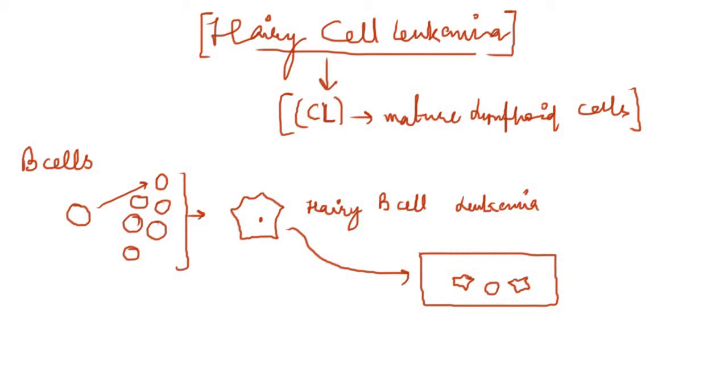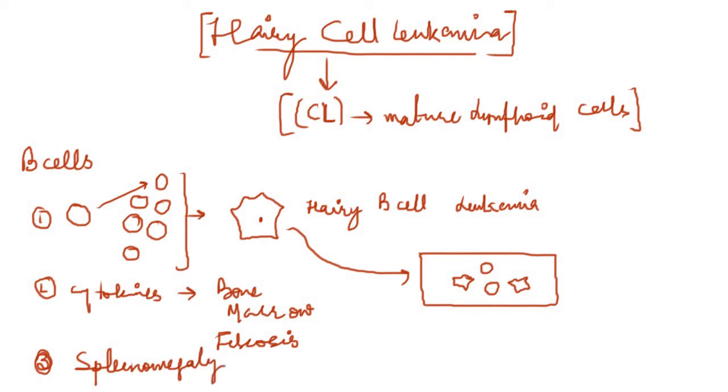Also these proliferated B cells, they will release certain cytokines and these cytokines will cause the bone marrow fibrosis. So in hairy cell leukemia, one of the important findings is that there is bone marrow fibrosis which is due to the release of cytokines from the B cells. Also these cells will infiltrate the spleen and this will lead to splenomegaly which is the enlargement of spleen. So the basic pathophysiology of hairy cell leukemia is the bone marrow fibrosis and splenomegaly.